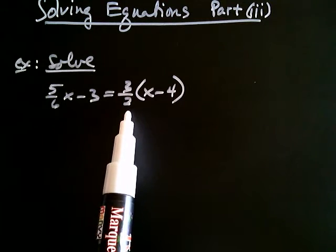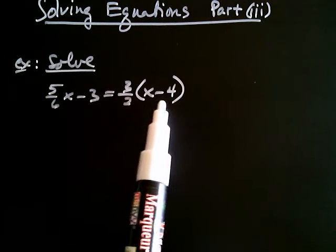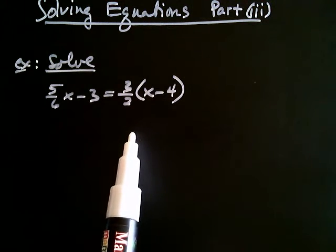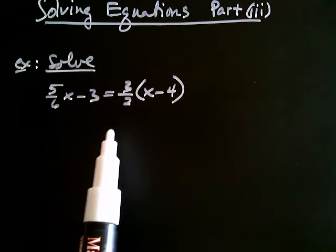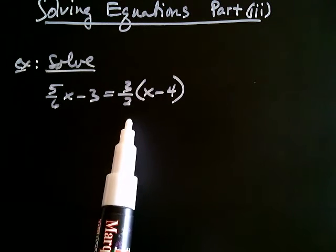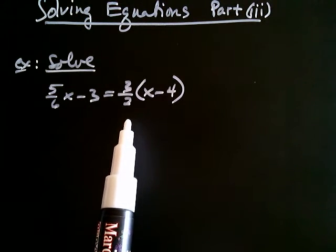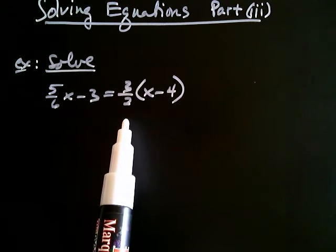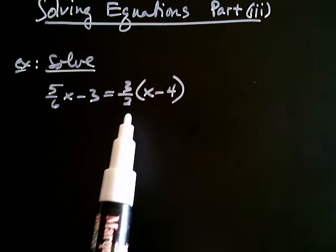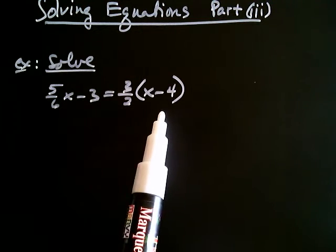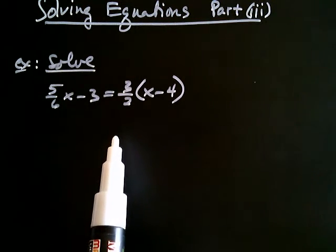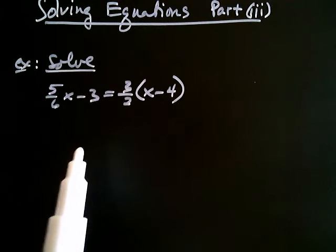So the reason I like this problem is because we're starting off with a situation where we have a fraction multiplied by a quantity. When that's the case, what we often like to do is multiply the fraction first. I'm going to take this 3/2 and distribute it over x minus 4.